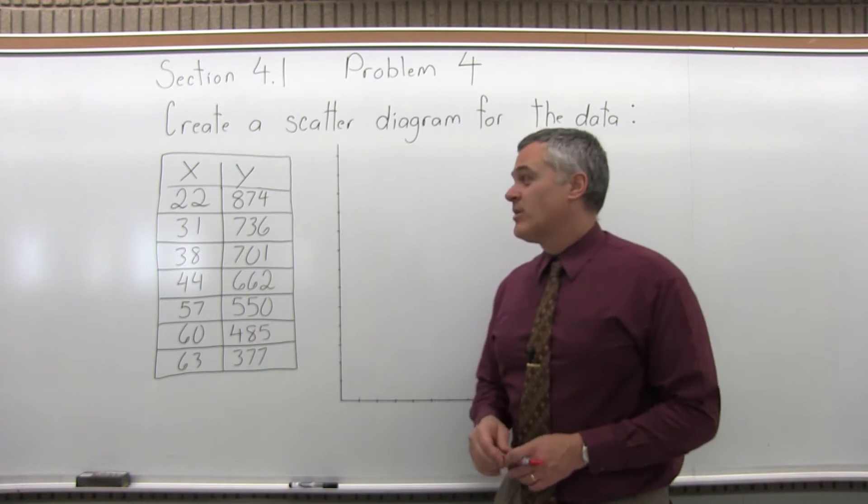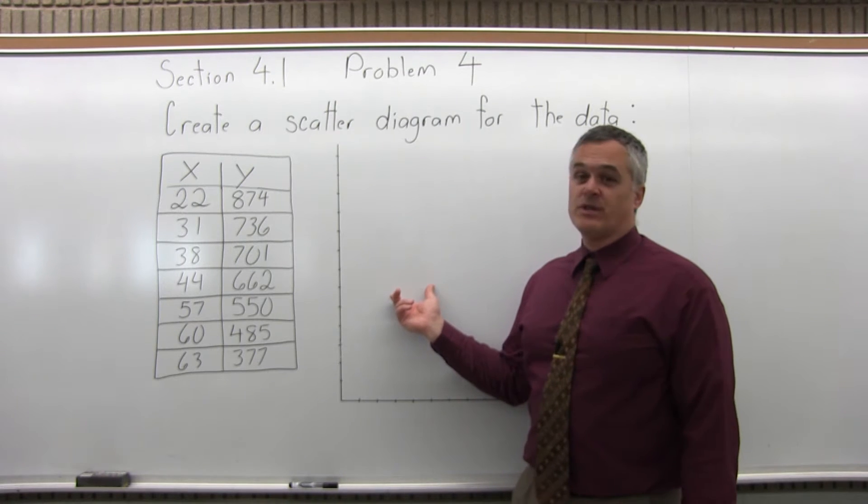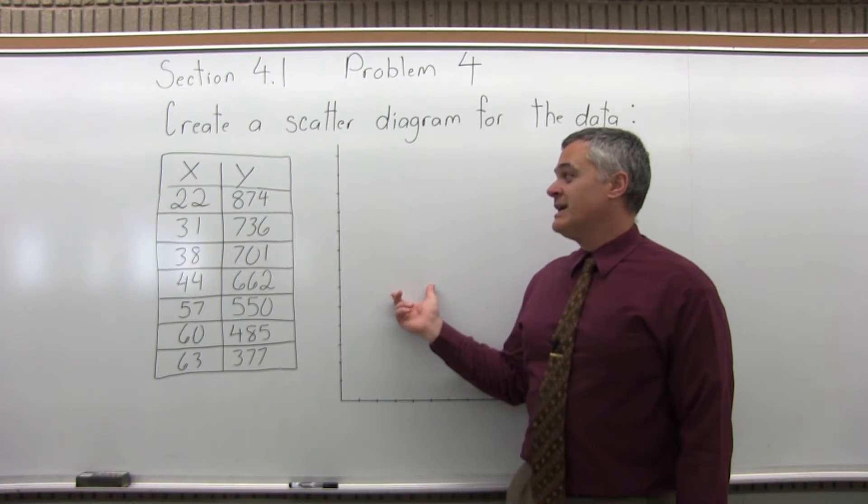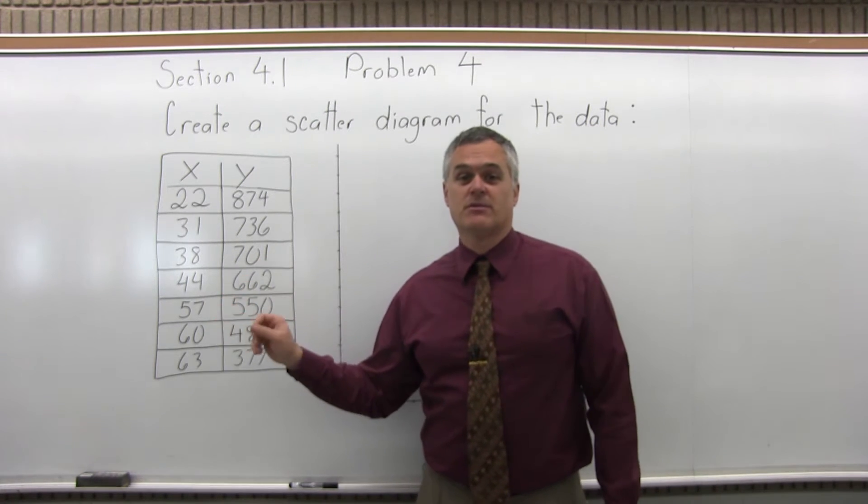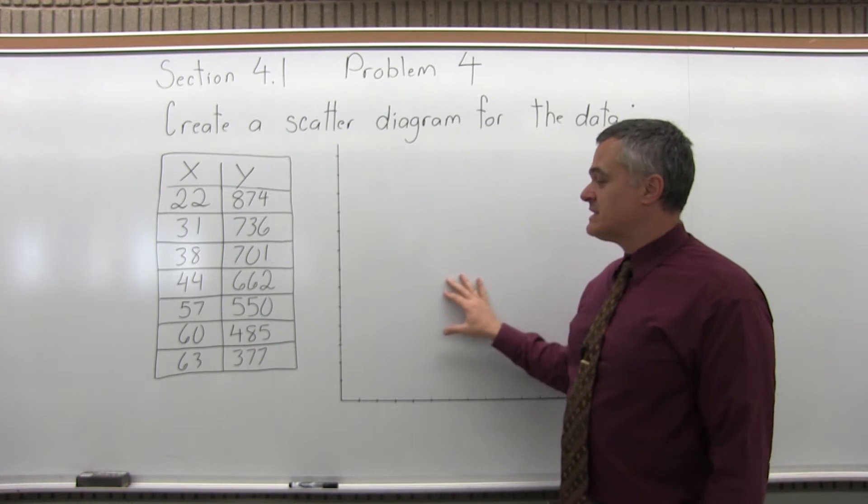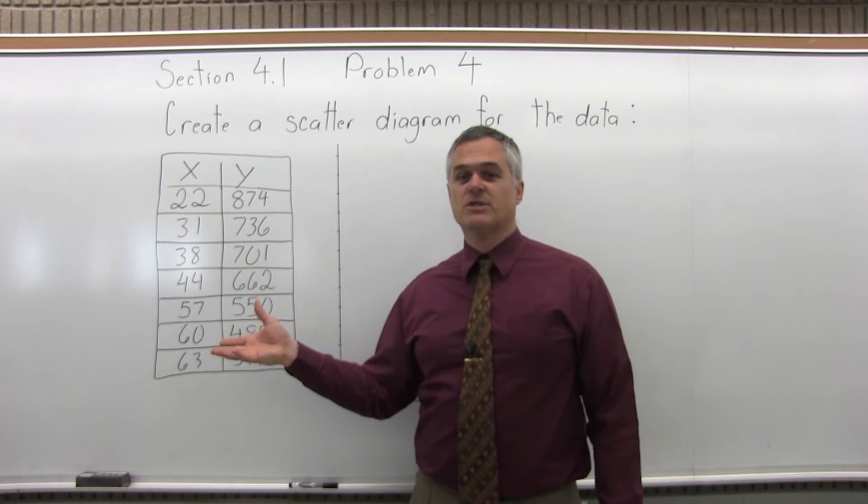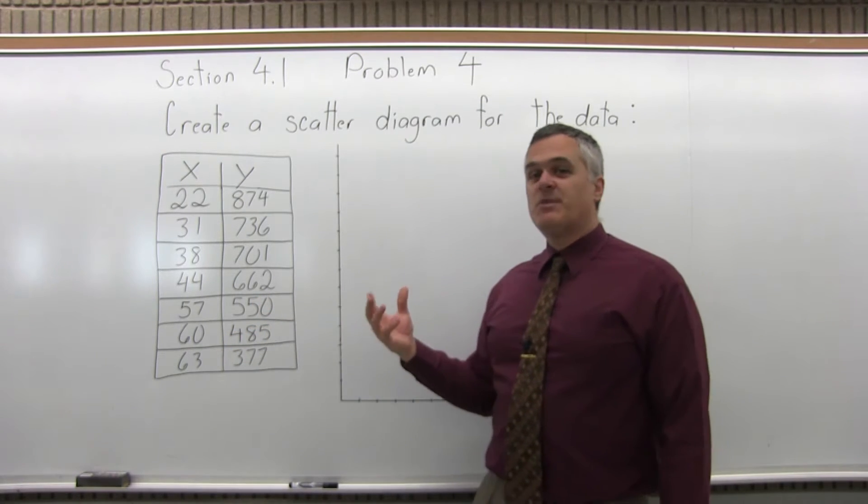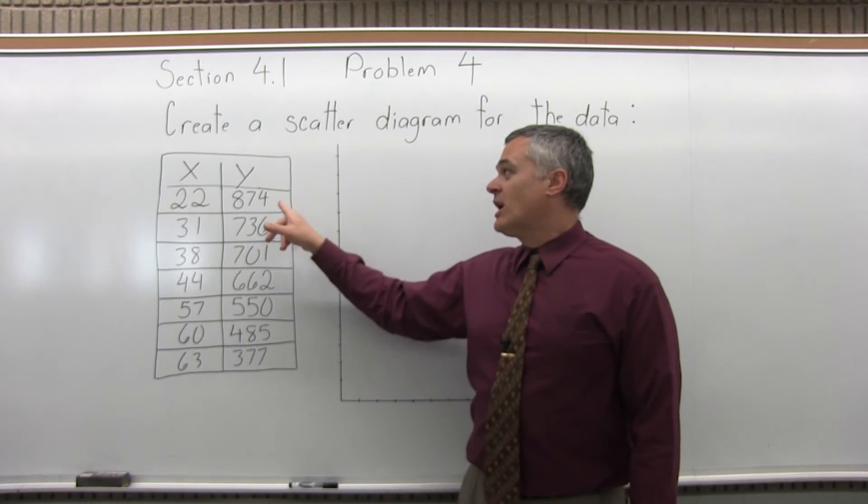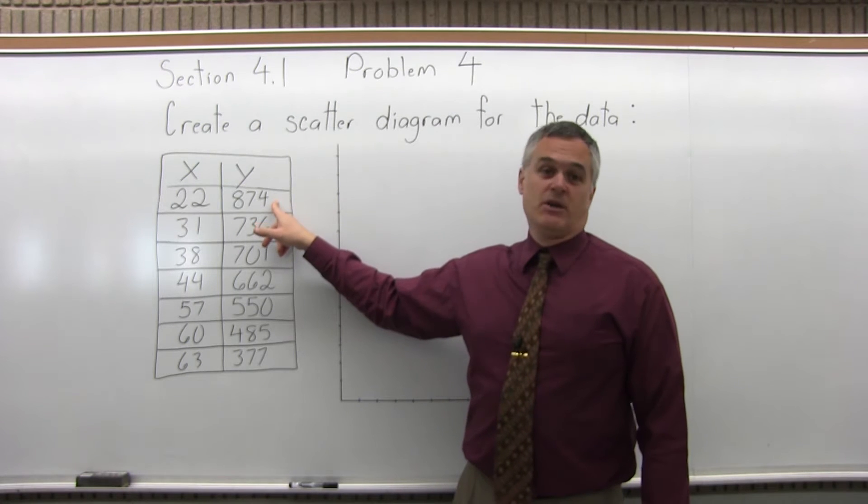Now what makes this problem of drawing the scatter diagram a little different than the previous problem is the numbers have gotten really big. So I have a graph started, but the question is how are we going to label it to accommodate these really big numbers? What you want to do is base your number scale on the largest value you're going to have to accommodate on your graph.